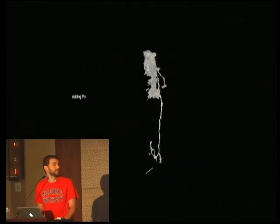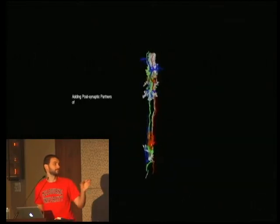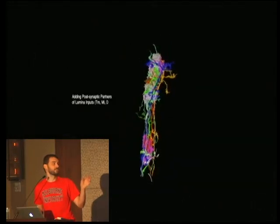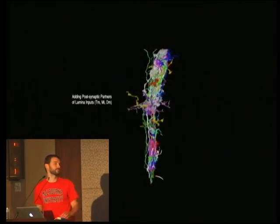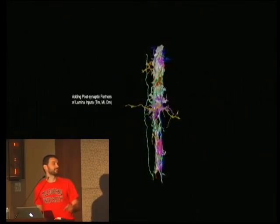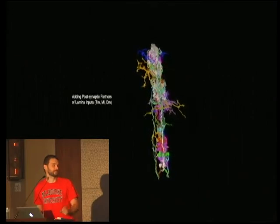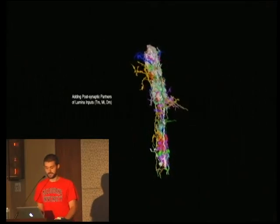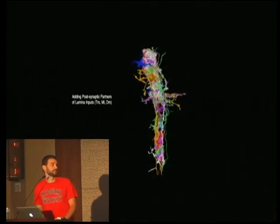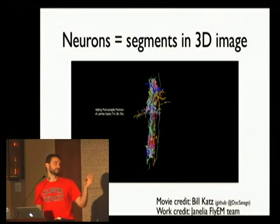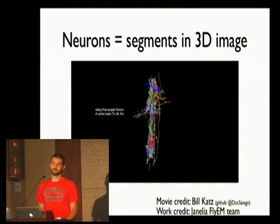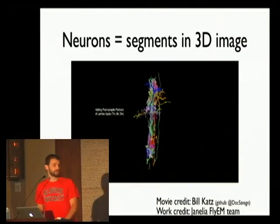From these segments, there are a whole bunch of other segments that are the neurons immediately downstream from those coming in from the lamina. The goal is to reconstruct from the images all the segments and all the connections and figure out how the fly visual system works. So that's just the motivation.